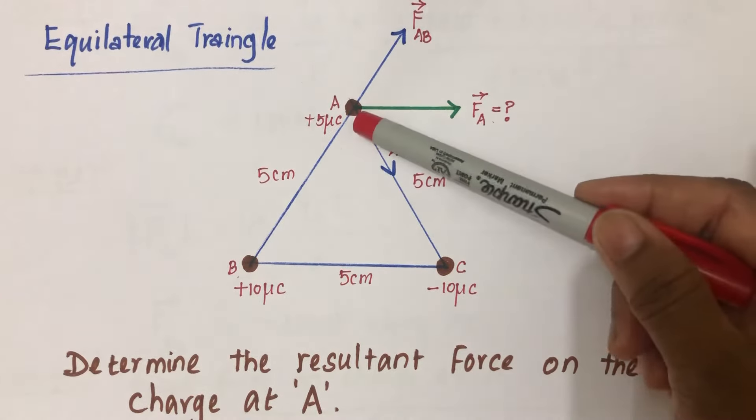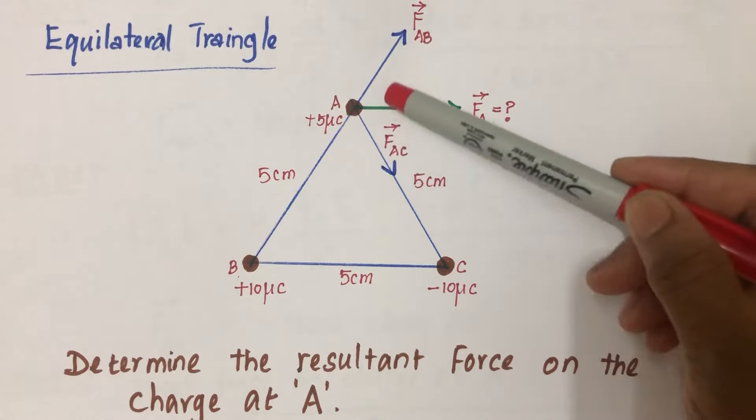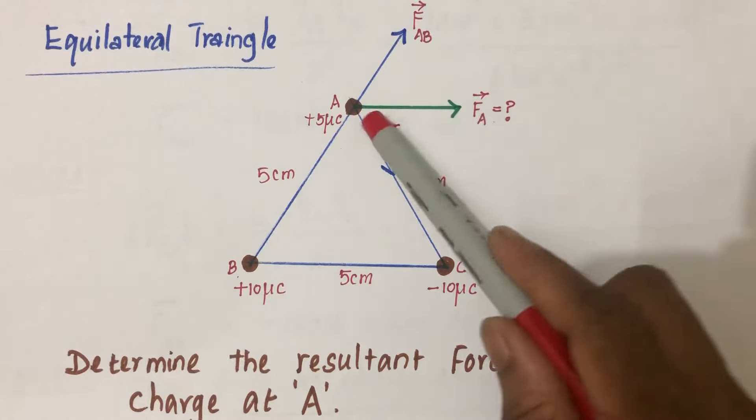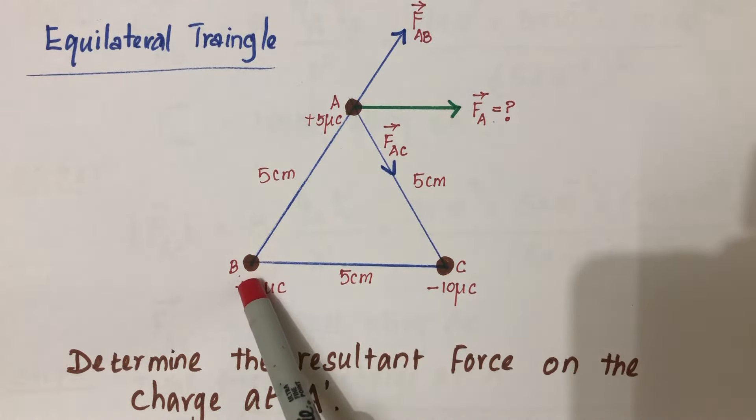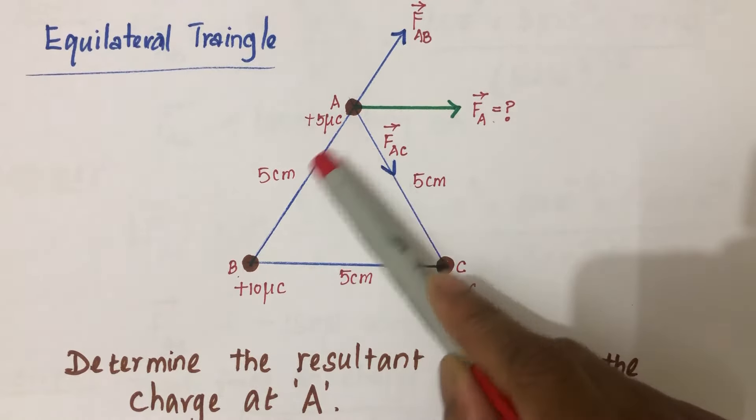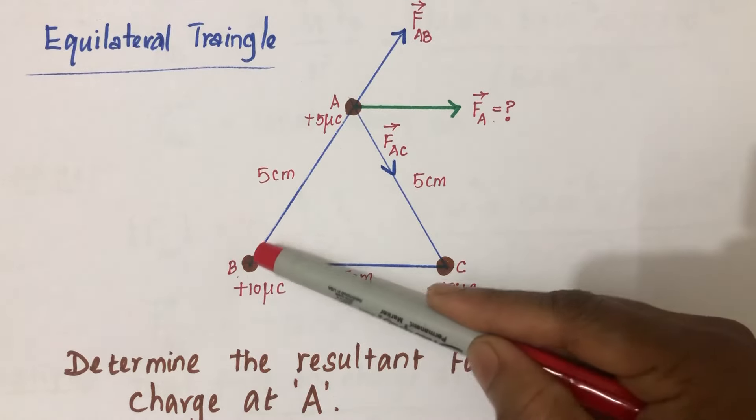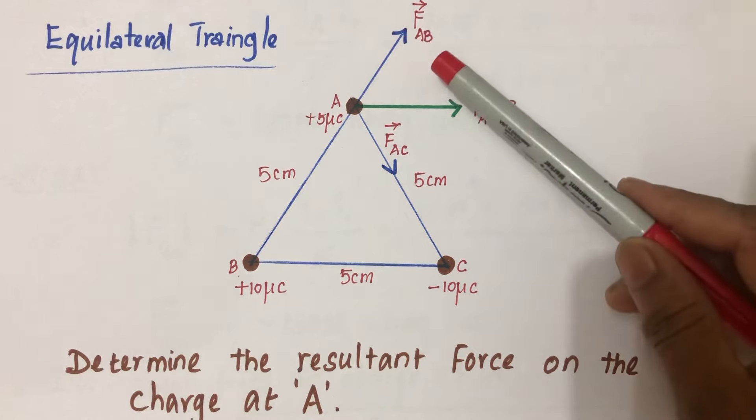We're going to draw the force vectors at this charge. First, the force on A due to B: here's plus 10 microcoulombs and this is plus 5 microcoulombs. Since both are positive, it will be a repulsive force going away like this. Let's name this FAB.